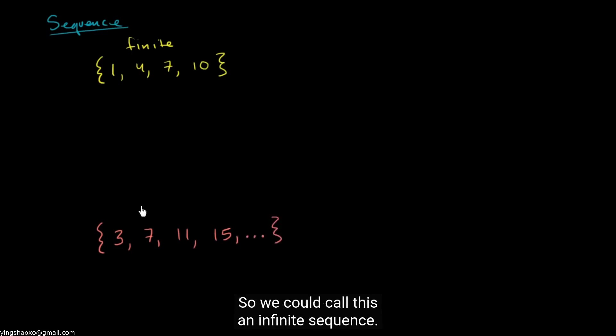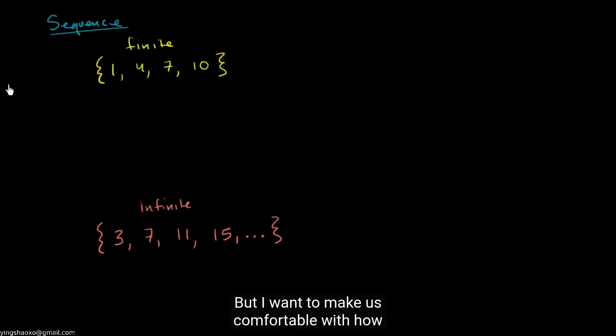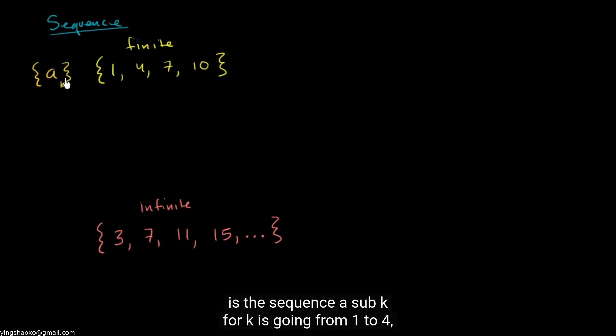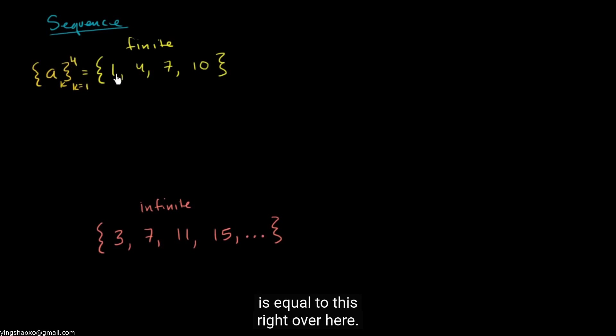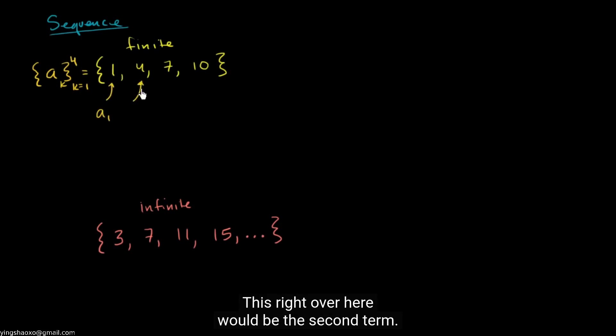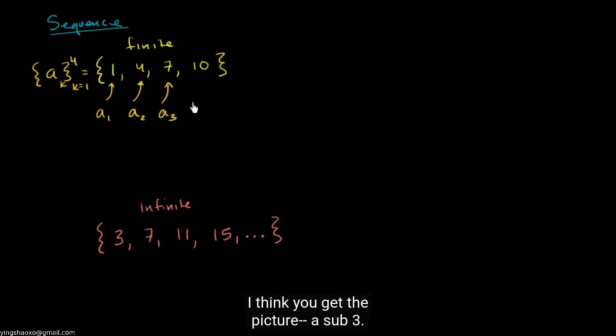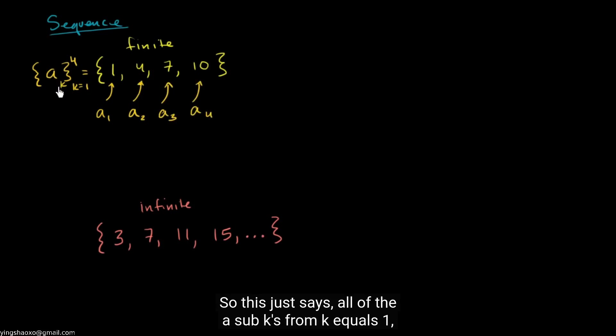There are a bunch of different notations for denoting sequences, but I want us to be comfortable with how we can denote and define them. We could say this is the sequence a sub k for k going from 1 to 4. Looking at it this way, each element is a term in the sequence. This right over here would be the first term — we'd call that a sub 1. The second term is a sub 2, then a sub 3, and a sub 4.